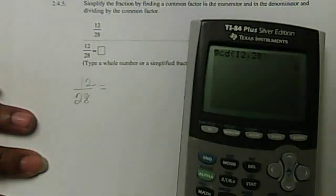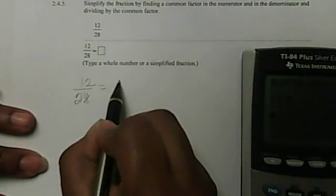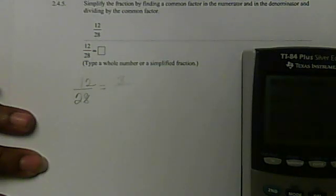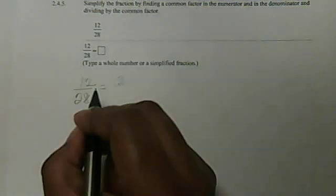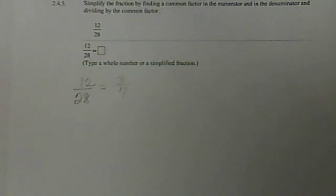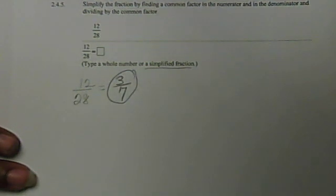So 12 divided by 4 gives me 3, and 28 divided by 4 gives me 7, so the result is 3 over 7. The greatest common factor was 4 and it totally reduces the problem. Since the only common factor between 3 and 7 is 1, we know it's fully simplified and reduced.